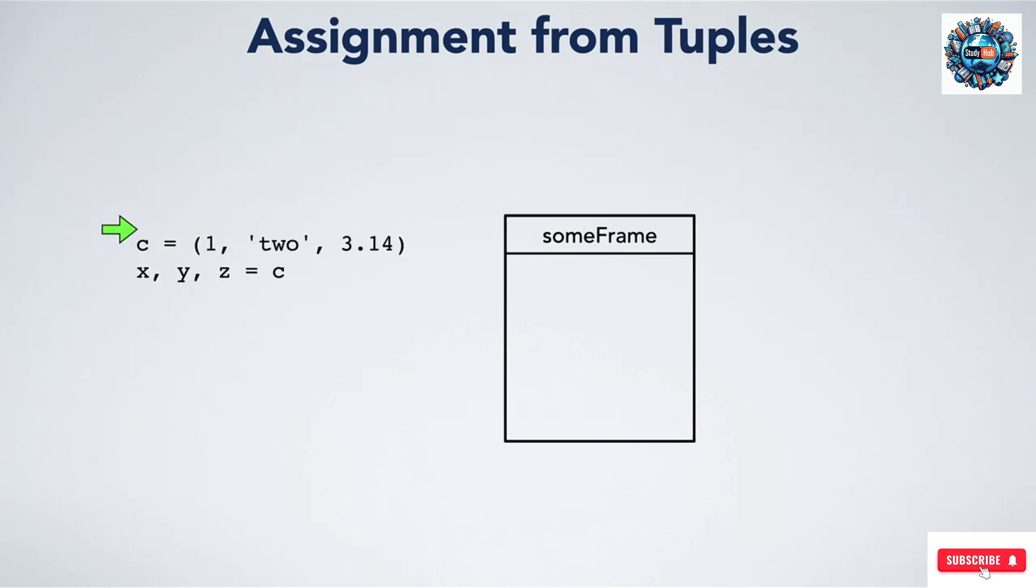The last thing we are going to mention about tuples is that you can assign from a tuple into multiple variables, one per element of the tuple. When you do this, Python will unpack the tuple, assigning each element to the corresponding variable. To see this, we start with the same tuple we have used in our recent examples. Note that it has three elements, and we are going to assign it to three variables, x, y, and z. When we do this, we assign 1 to x, two to y, and 3.14 to z.